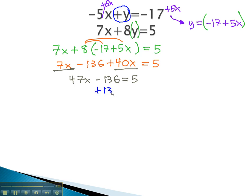Adding 136 to both sides, we find 47x is equal to 141. Dividing both sides by 47 to isolate the x, which is equal to 3.